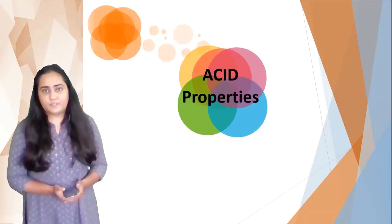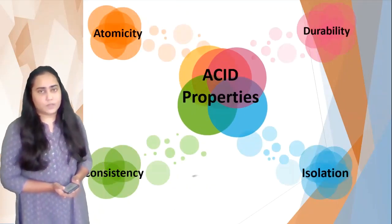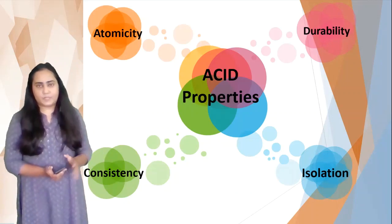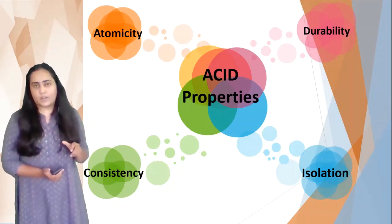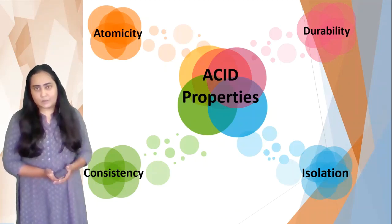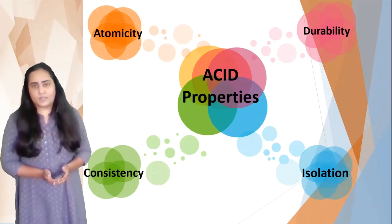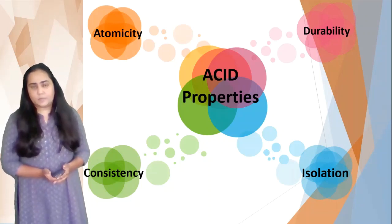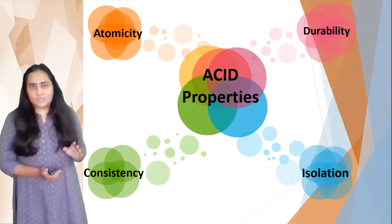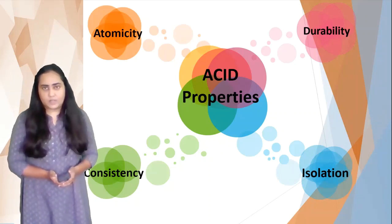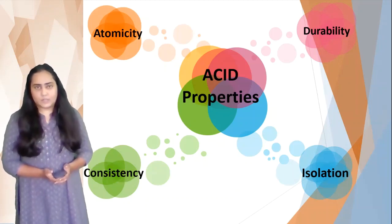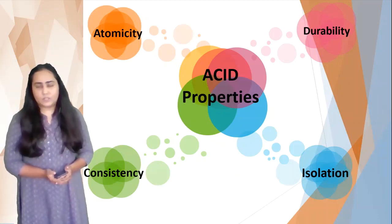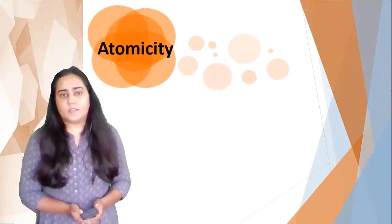Now let's look at the different ACID properties of transactions. All transactions must follow these properties, which exist so that transactions do not affect the database in an adverse manner. If these properties are not satisfied, your database could suffer data loss or data discrepancy. The properties are Atomicity, Consistency, Isolation, and Durability. Let's take a look at them one by one, starting with Atomicity.